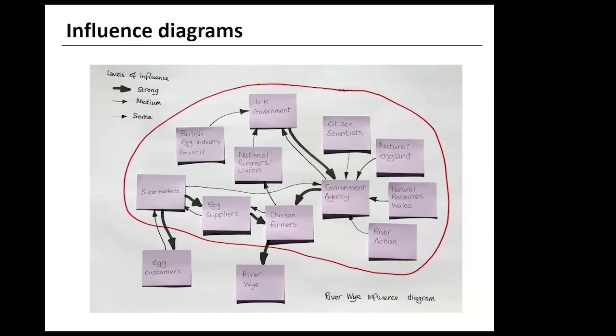So in my interpretation, the big influences on chicken farms are from the egg suppliers, who will be demanding cheap eggs, and the Environment Agency, who are monitoring discharges into the river. They in turn are influenced by the various other statutory bodies and pressure groups, but also come under strong influence from central government through things like limited funding and so on.